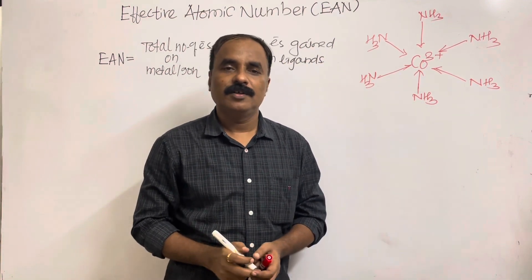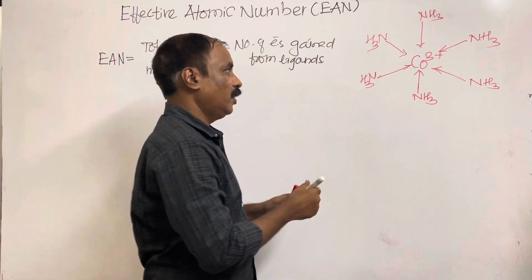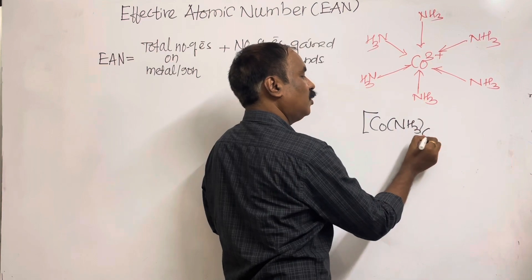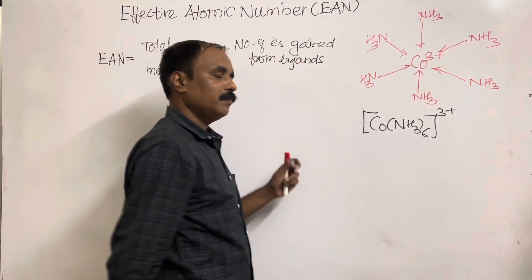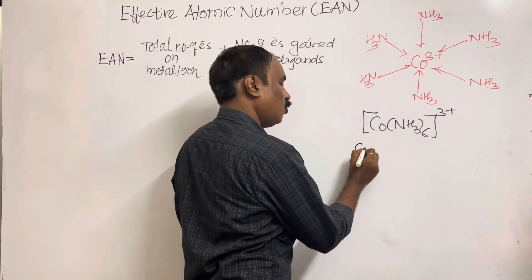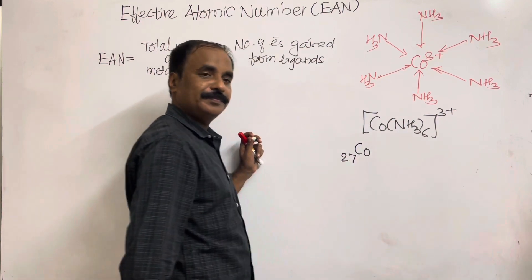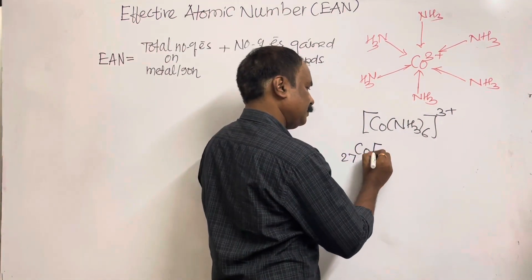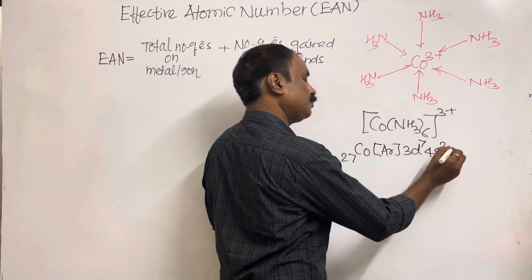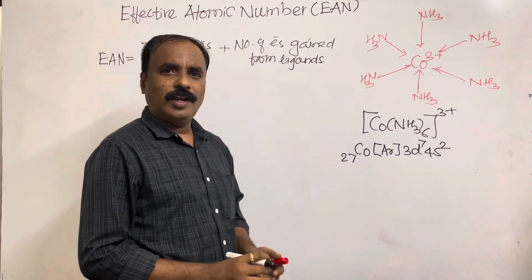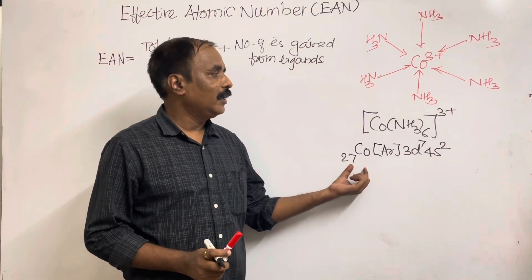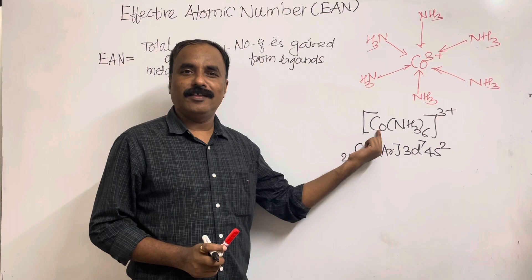Let us take the example of the hexamminecobalt(III) complex. The atomic number of cobalt is 27, with electronic configuration [Ar] 3d⁷ 4s². So neutral cobalt has 27 electrons. In this complex, cobalt has an oxidation state of +3, since ammonia is a neutral ligand.